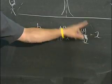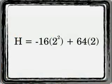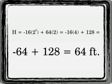Now we have a value for x that we can plug into the equation, so now we can find out how high the ball will actually go. So we're going to say h equals negative 16 times 2 squared plus 64 times 2, substituting that value in. Well, 2 squared is 4, so it's going to be negative 16 times 4 plus 64 times 2 is 128. Negative 16 times 4 is negative 64 plus 128.